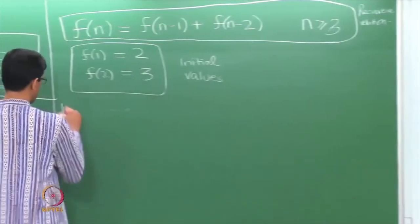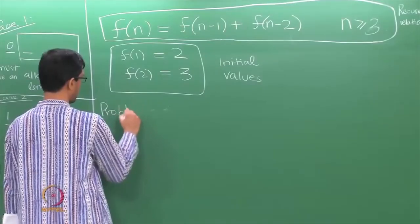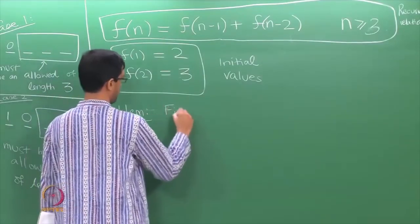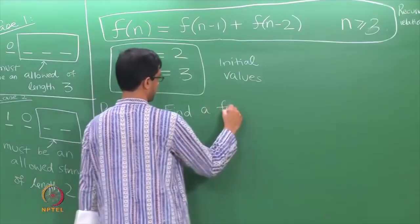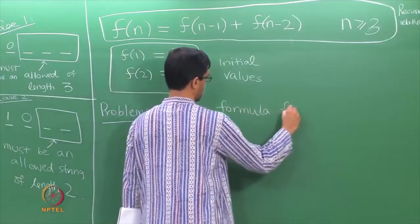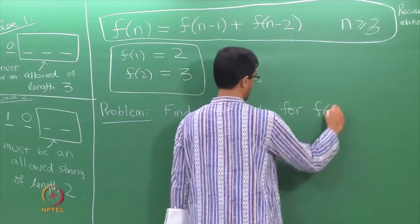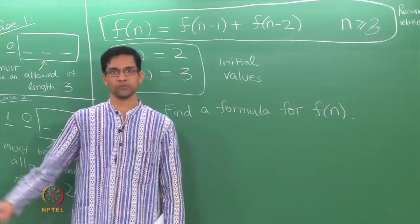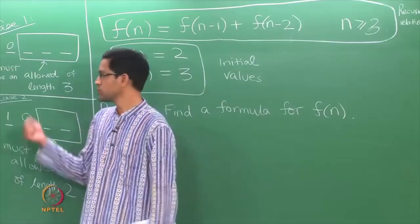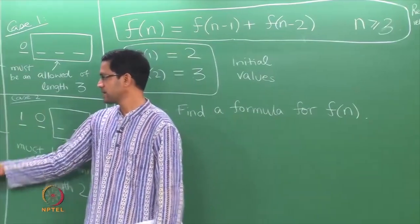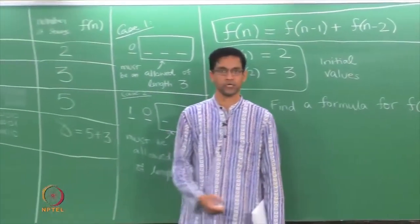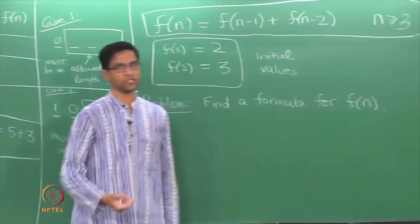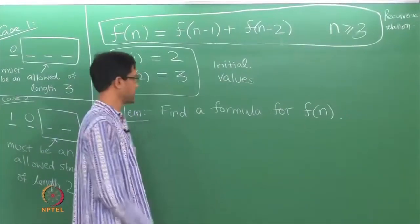Now here is the problem we would really like to understand: how do we find a formula for f of n? It is easy to write down the values by just adding: 2, 3, 5, 8, 13, 21, 34 and so on. But what we want is a formula which, given n, tells you directly what f of n is.